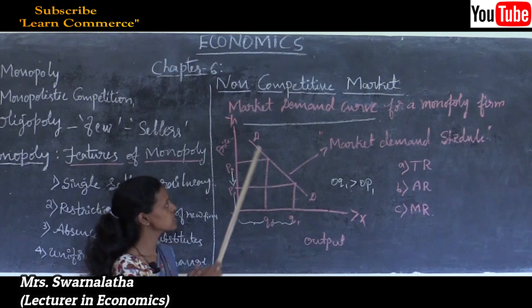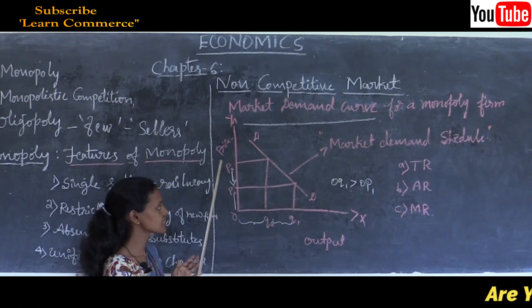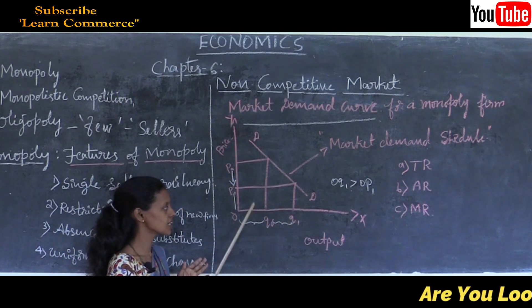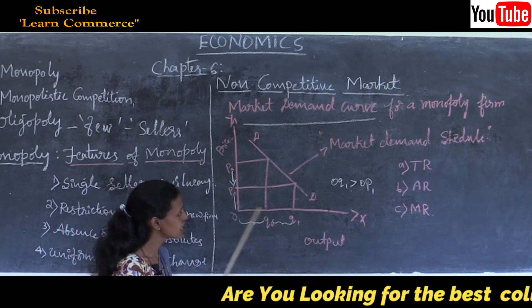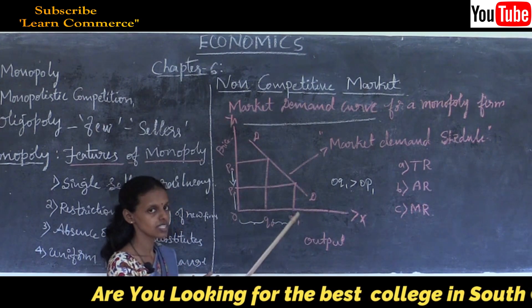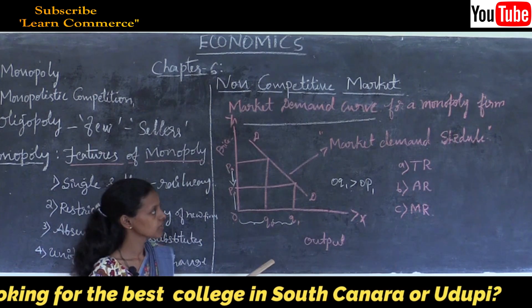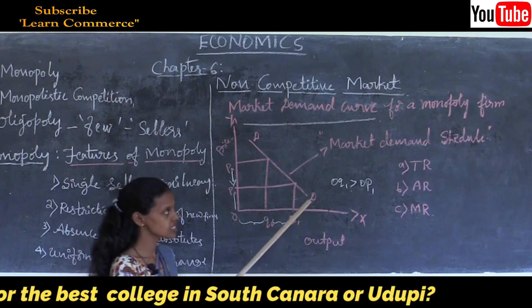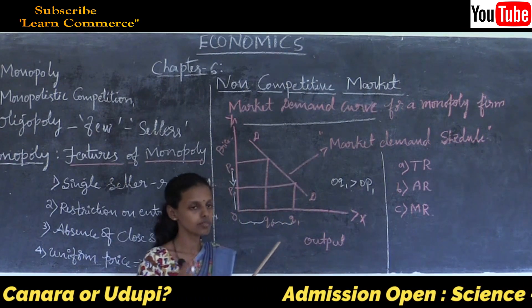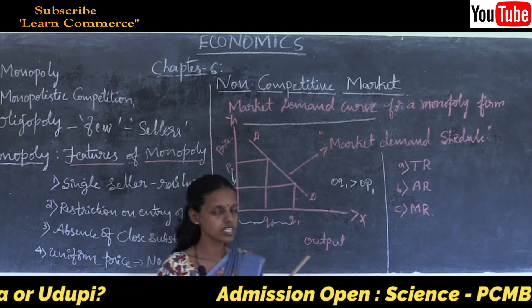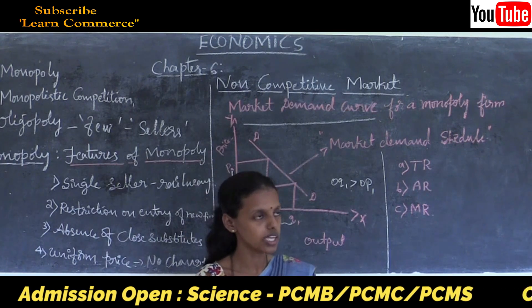The next concept to study is total revenue, average revenue, and marginal revenue under the monopoly firm.